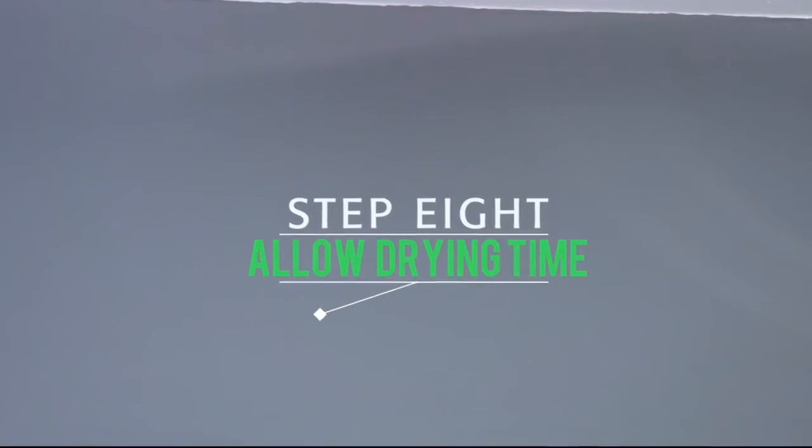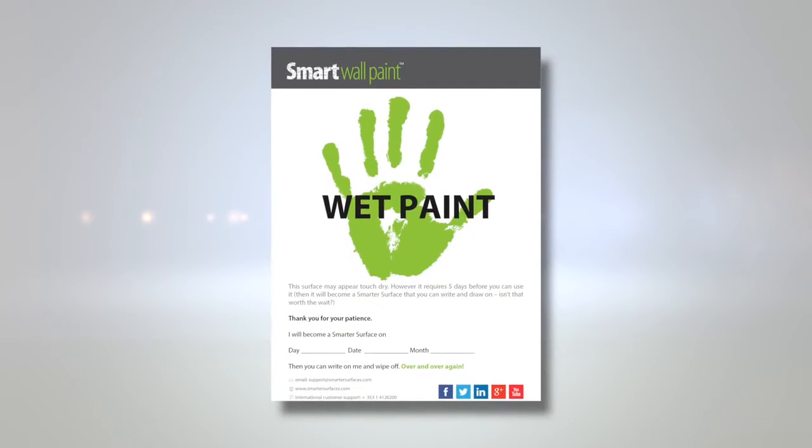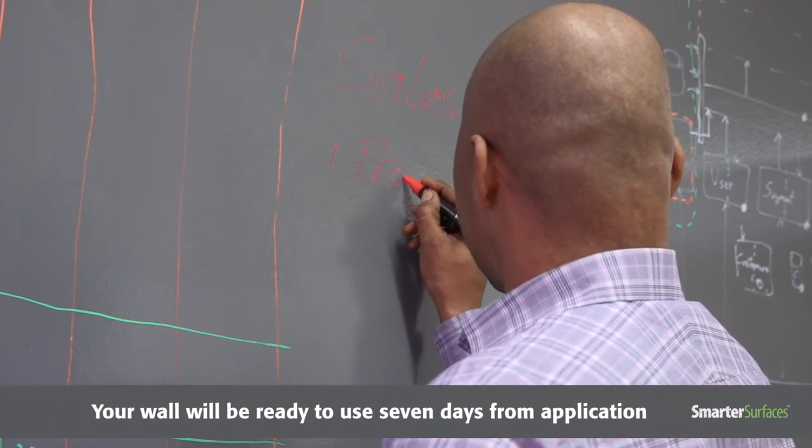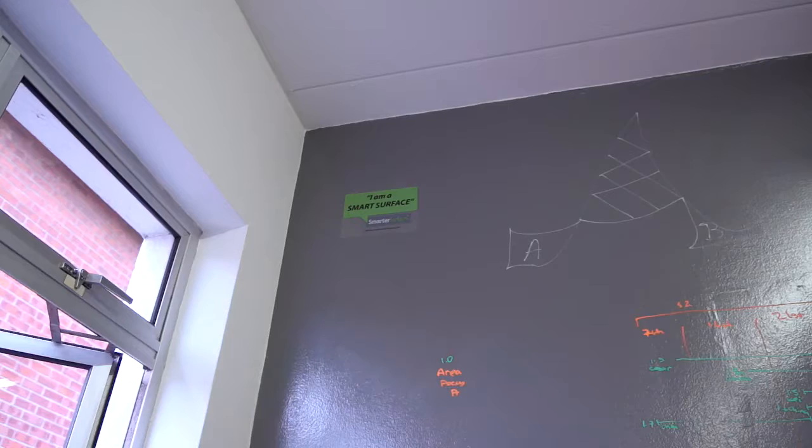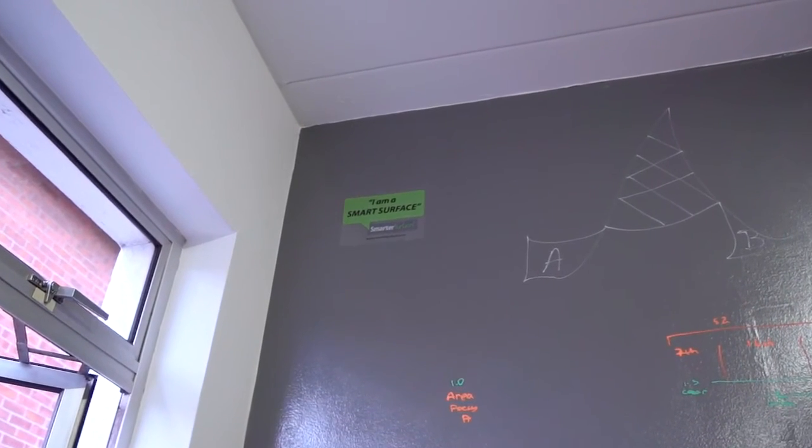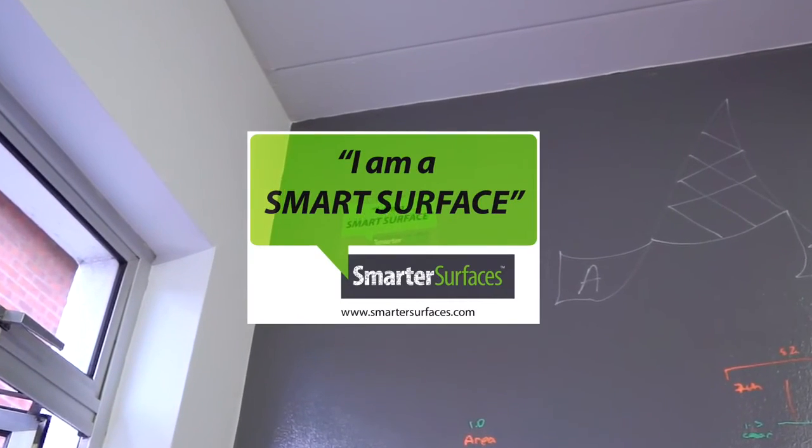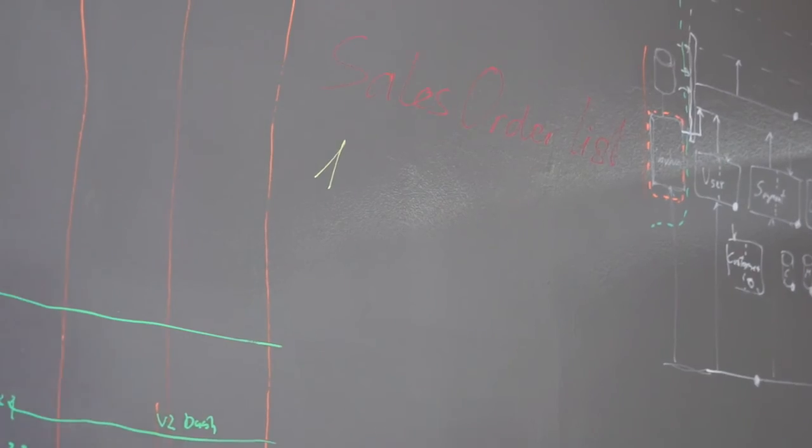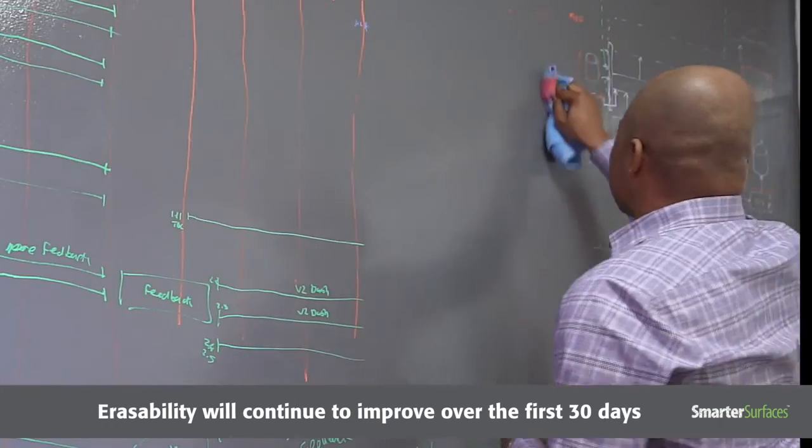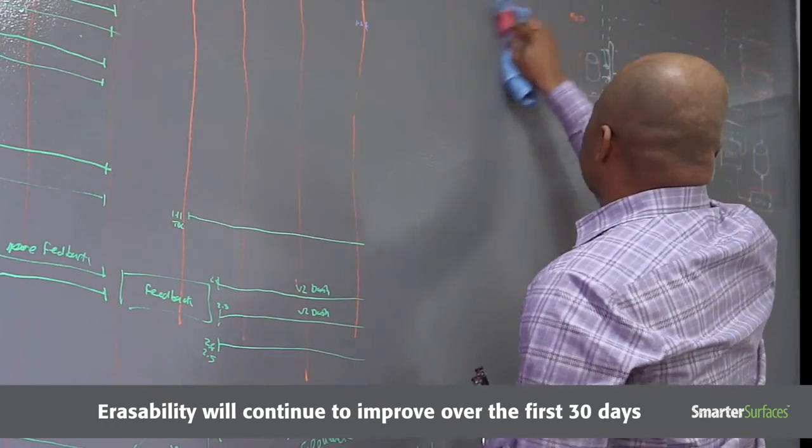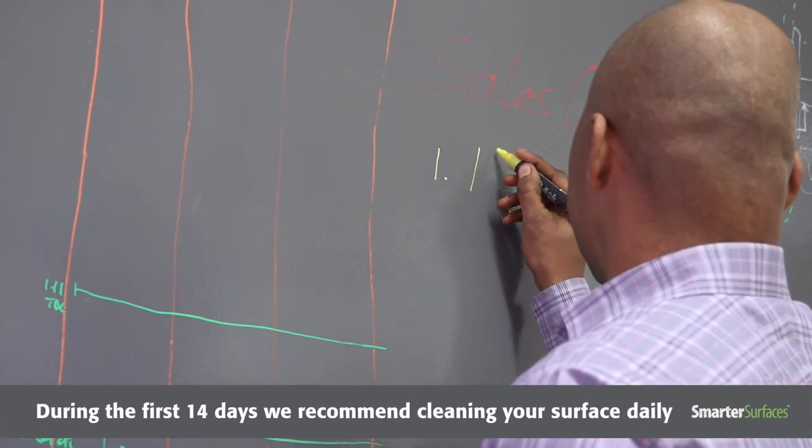Step 8. Allow drying time. Affix the wet paint sign alongside the painted surface. Please note that your wall will be ready to use 7 days from application of your SmartWall Paint. Once the paint is touch dry, apply your Smarter Surface sticker on the wall. The performance of SmartWall Paint erasability will continue to improve over the first 30 days. During the first 14 days, we recommend cleaning your surface daily.